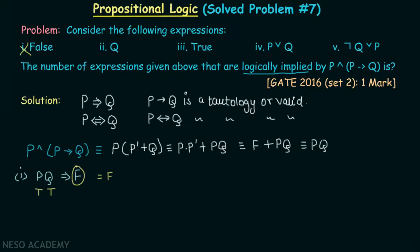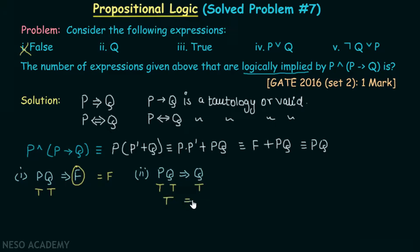Let's consider the second expression: does pq logically imply q? In order to make pq true, we need p true and q true. If q is true, then the consequent q is also true, giving true implies true — which is true. We cannot make this expression false, so q is logically implied by p AND (p implies q).